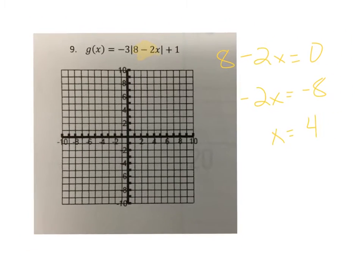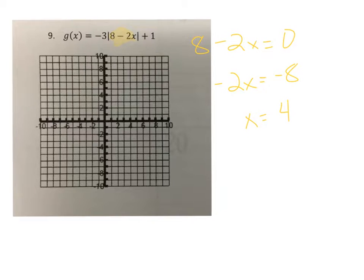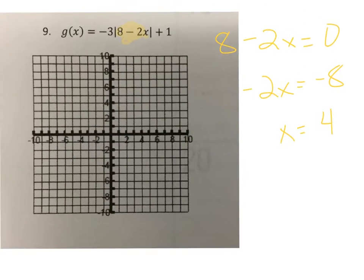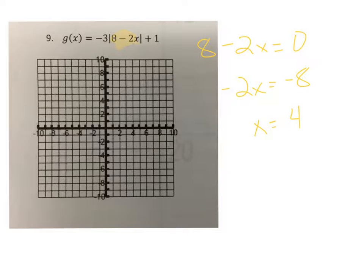Okay, so 4 would be potentially where it's going to be. So let's see, if x is 4, then where is the y value?